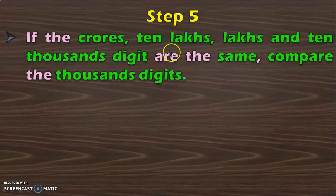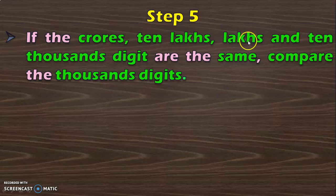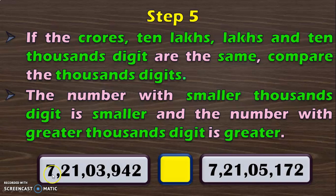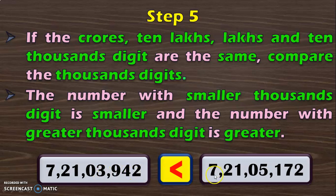In the next situation, where you have two numbers with crore's, 10 lakhs, lakhs and 10,000th digit to be the same, compare the thousandth digit. The number with smaller thousandth digit is smaller and the number with greater thousandth digit is greater. You have two numbers with the crore's place, 10 lakhs, lakhs and 10,000th digit to be the same in both numbers. So next compare the thousandth digit where you have 3 and 5. We know that 3 is lesser than 5. With that you conclude 7 crore 21,3,942 is lesser than 7 crore 21,5,172.